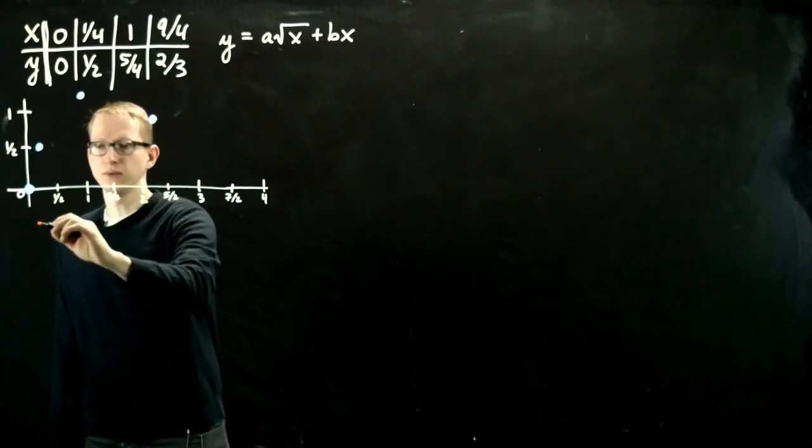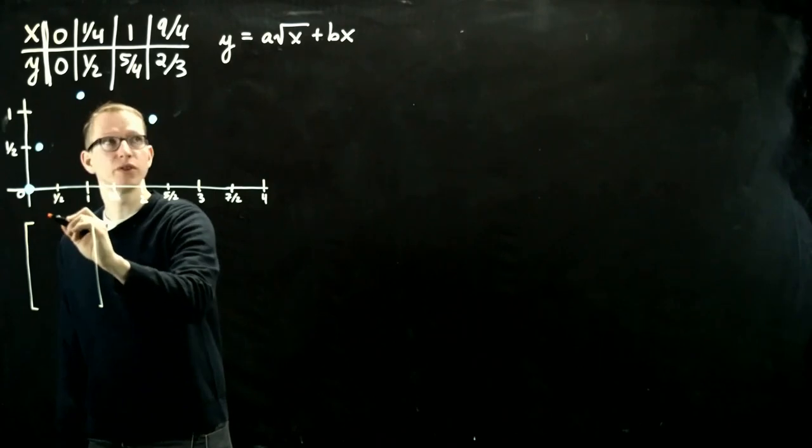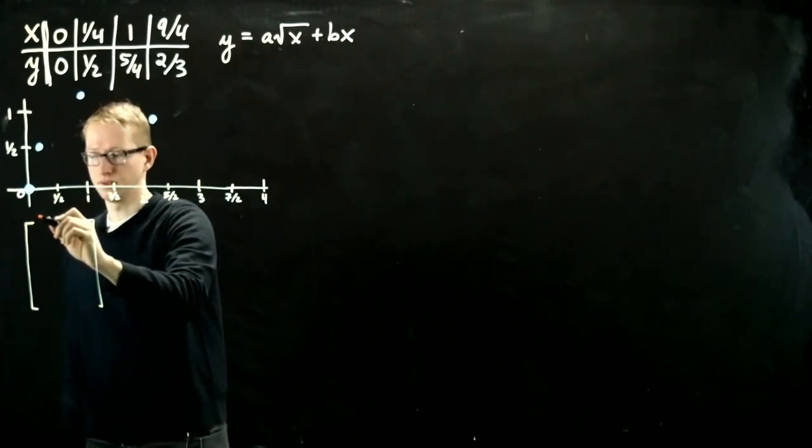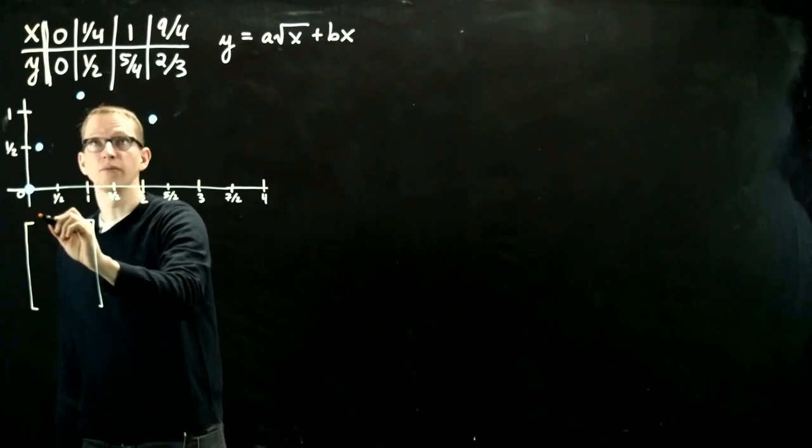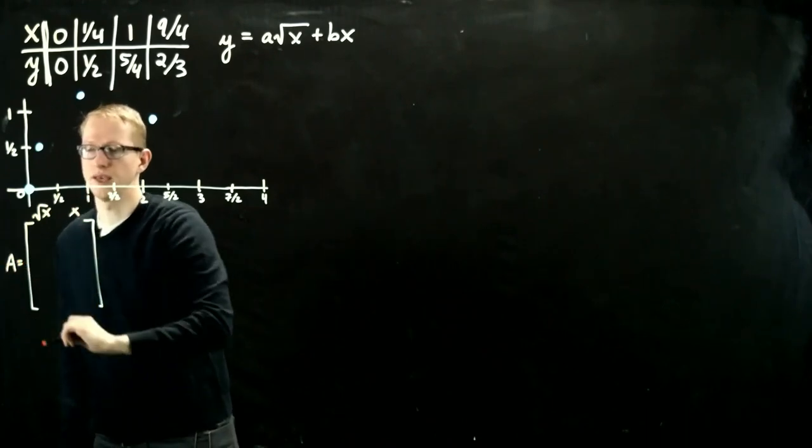So when we set up this problem, our matrix A in this case, I'm going to put the values of the square root of x, for instance, in the first entry. And in the second entry, I'll put the values of x, so this is going to be our matrix A.